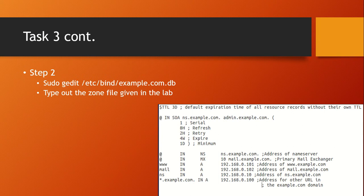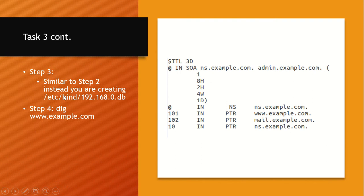Type the zone file contents exactly as given in the lab instructions — the screenshots show everything that needs to be entered. For Step 3, repeat the process but create the 192.168.0.db file. Afterward, run dig example.com and the output should display the answer section, authority section, and additional section, showing the correct IP address for example.com.